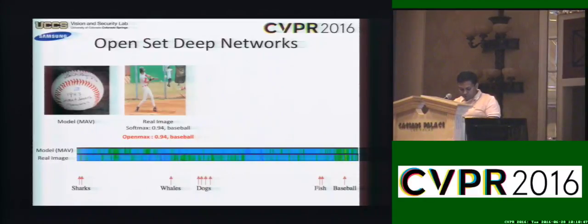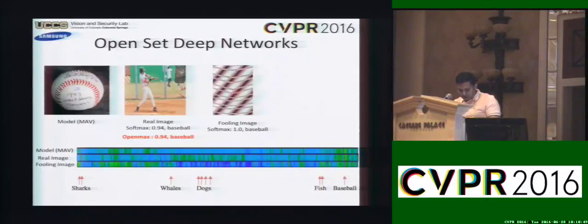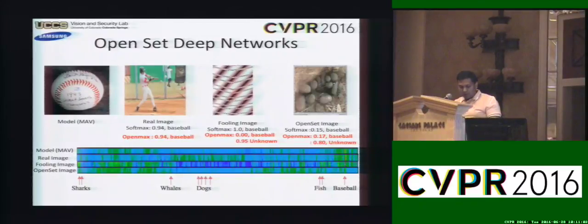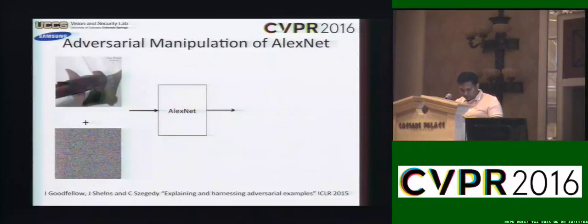For an image from an unseen category, OpenMAX is able to provide high confidence for the unknown category. Visual inspection of the MAV shows a dissimilar activation pattern for different categories for fooling and open-set images. This is why OpenMAX is able to mark them as belonging to unknown and unseen categories reliably.